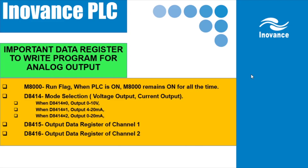Before making the program with Inovance PLC, you have to memorize some important data registers. The first data register is M8000 — M8000 is the run flag, meaning when the PLC is on, M8000 remains on all the time. The second data register is D8414 — it's a mode selection register. When D8414 equals zero, the output will be 0 to 10 volts. If you move 1 to D8414, the output will be 4 to 20 milliamp, and if you move 2, the output will be 0 to 20 milliamp.